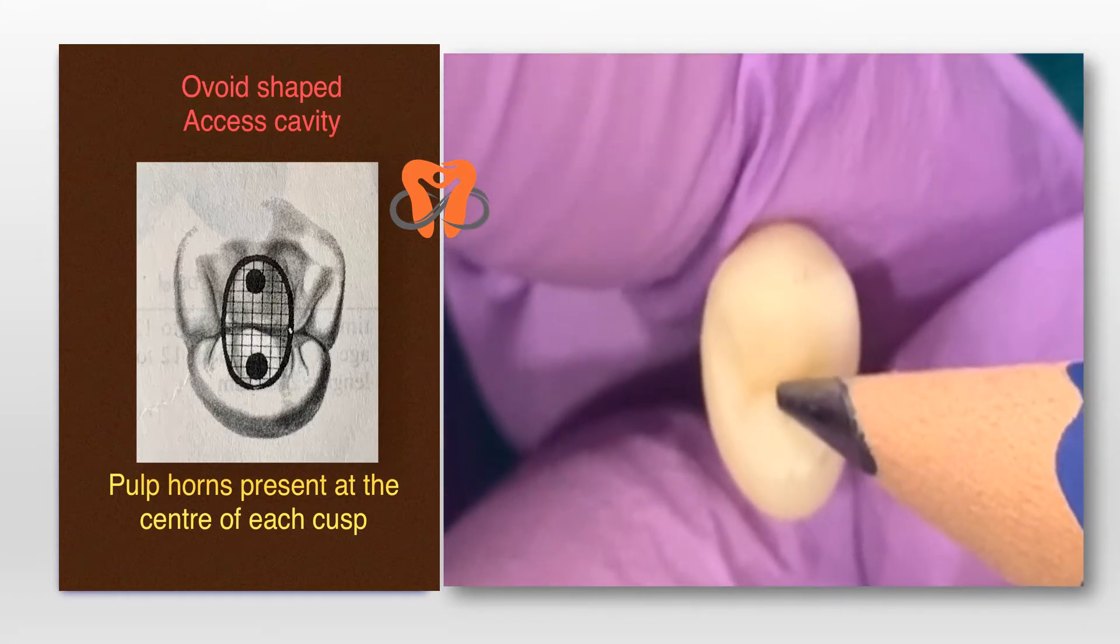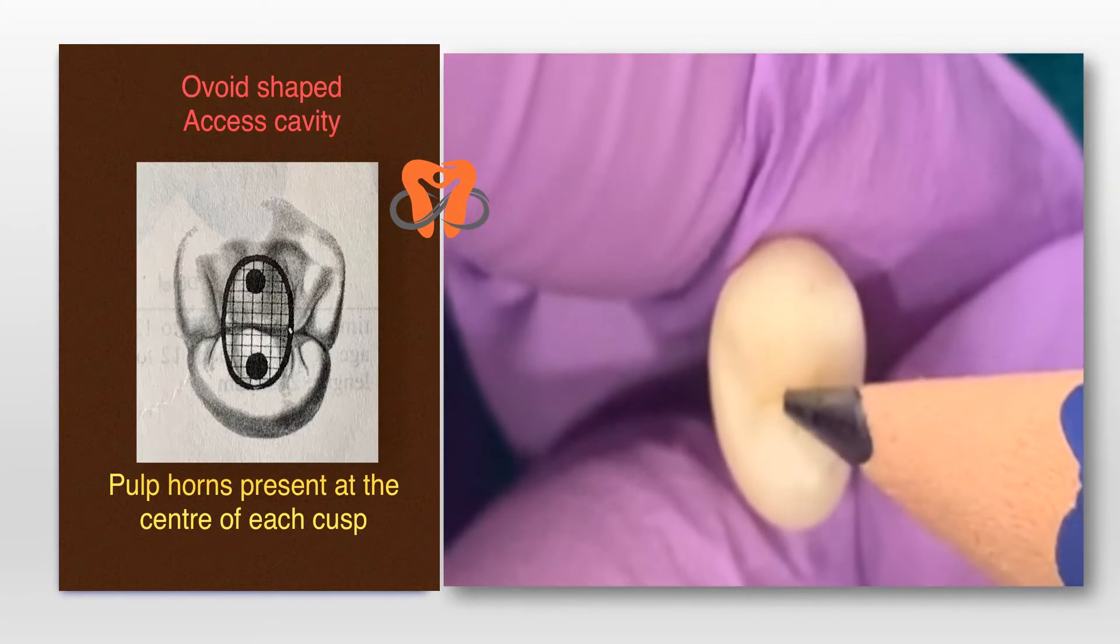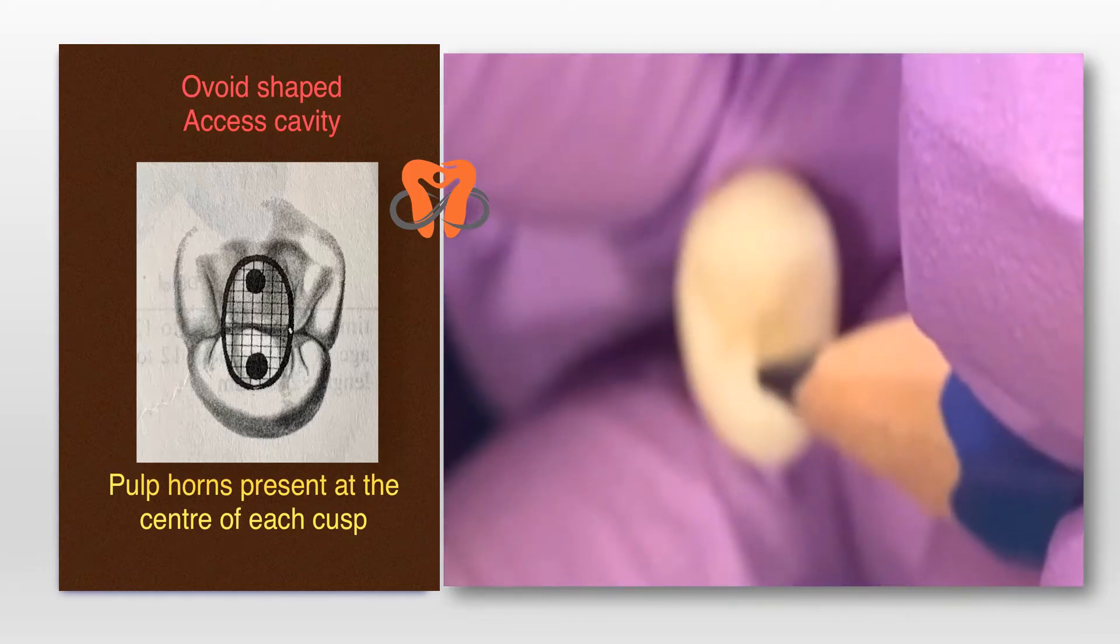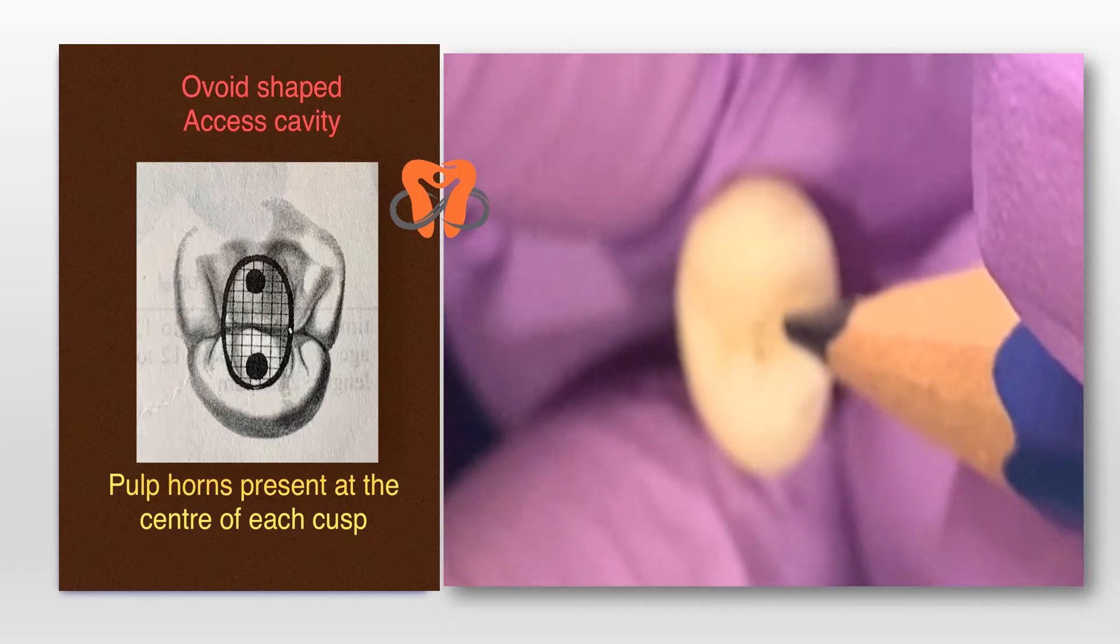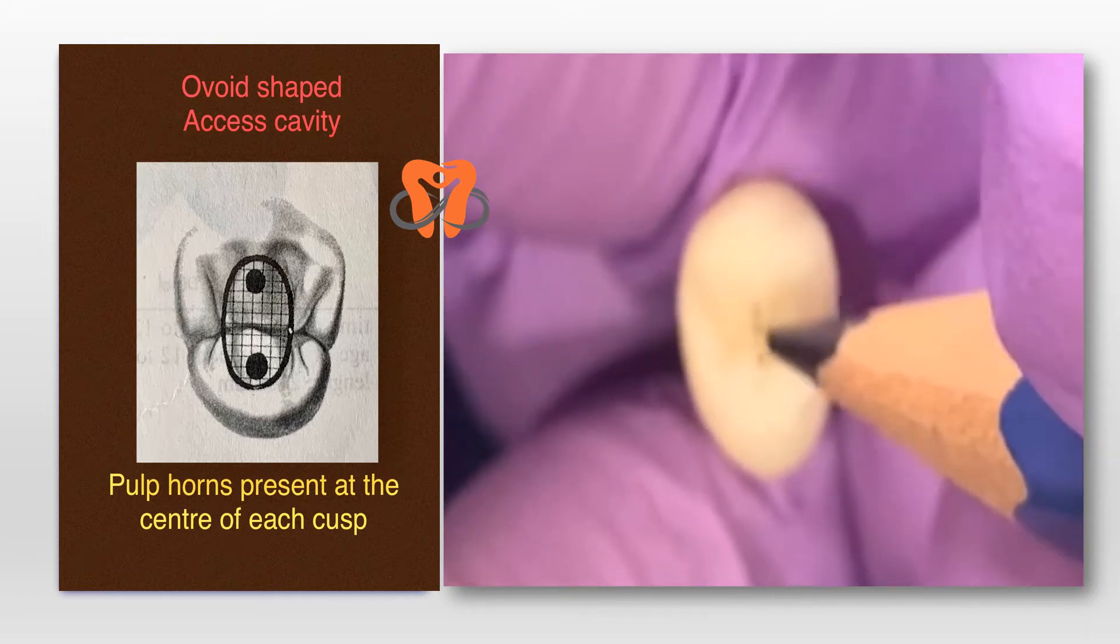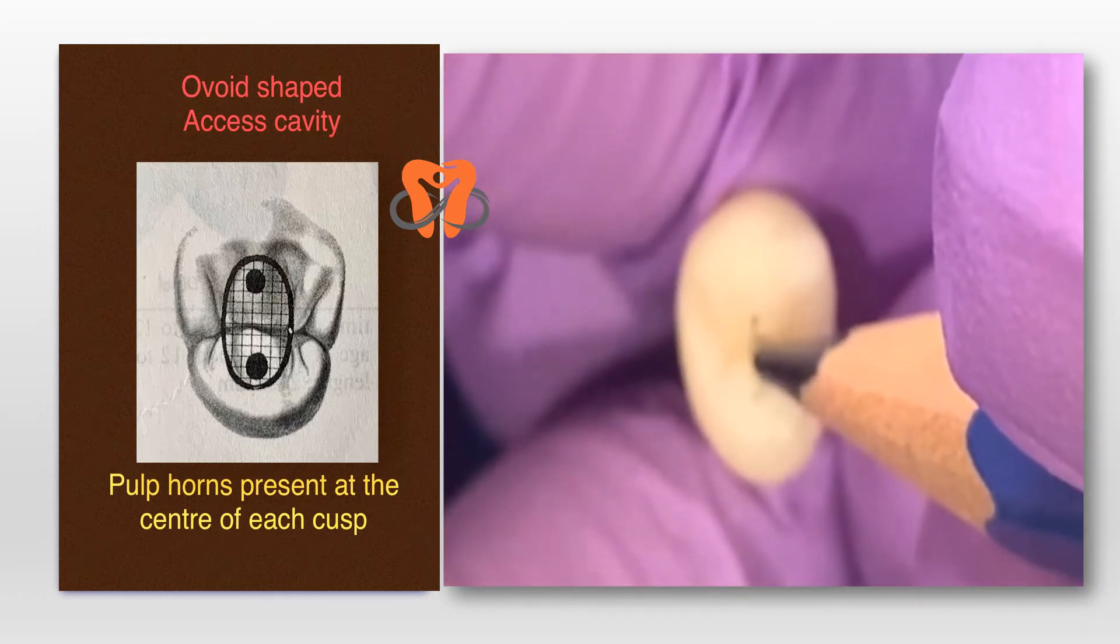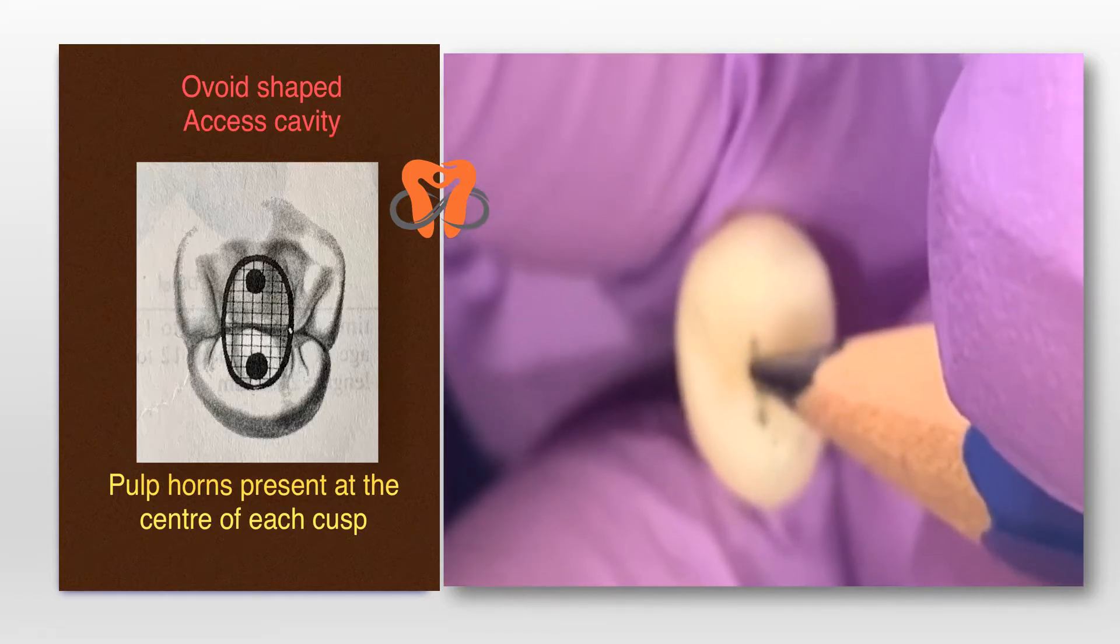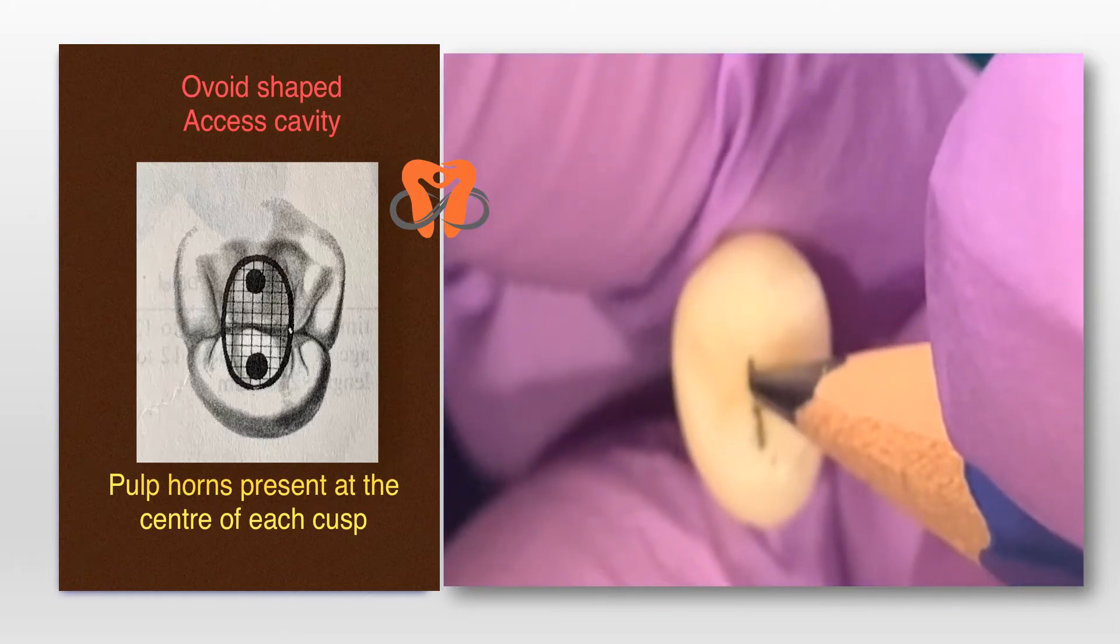To make the access cavity, mark a point at the center of the central groove like this. Now mark another point at the center of the buccal cusp in the midpoint, and a point in the midpoint of the lingual cusp. Now join all these three points with a line.